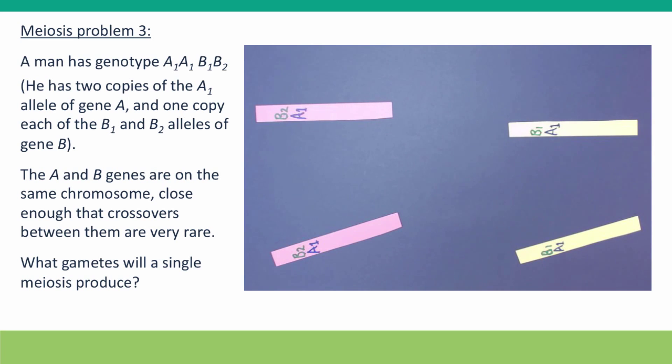Again, we didn't need to worry about the A alleles at all because the man was homozygous for A. We could have just written B1 and B2 on our chromosomes and completely ignored the A alleles.